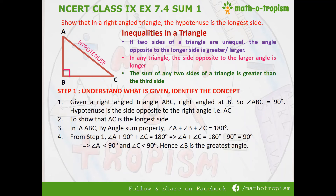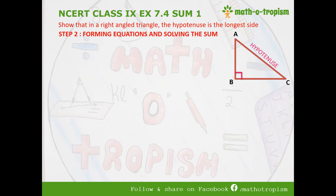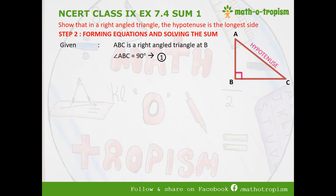Now we can use the second theorem: in any triangle, the side opposite to the larger angle is longer. We have shown that angle B is the greatest angle. Therefore, AC — the side opposite to angle B — is the longest side. The next step is forming equations and solving the sum. Given: ABC is a right angled triangle, right angled at B, where angle B equals 90 degrees — we keep this as equation 1.